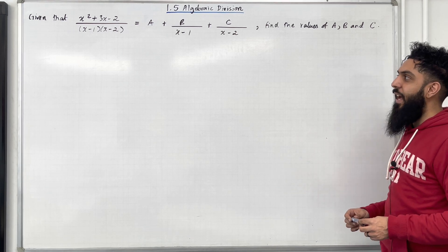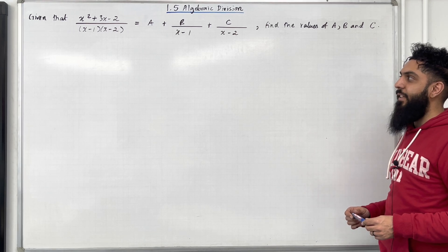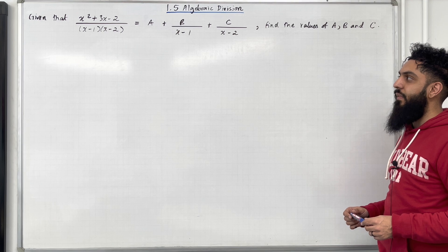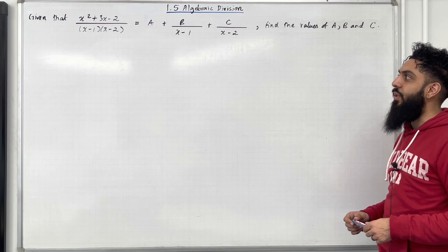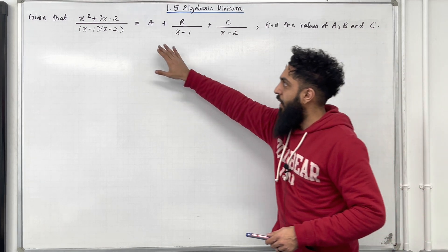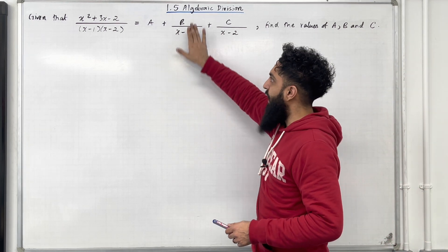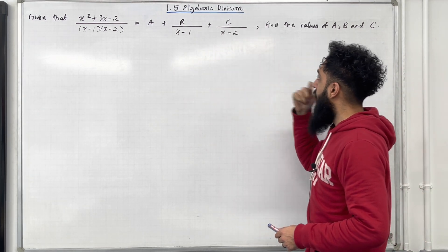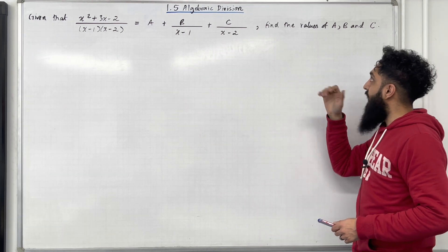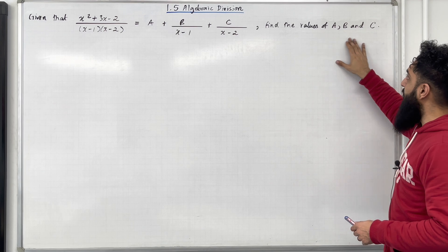Given that x squared plus 3x minus 2 all over x minus 1 in brackets multiplied by x minus 2 in brackets is equal to a plus b over x minus 1 plus c over x minus 2, find the values of a, b and c.